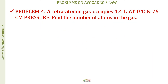The next question: a tetraatomic gas occupies 1.4 liters at 0°C and 76 cm pressure. We need to find the number of atoms. At 0°C and 76 cm of mercury, this is 1 atmosphere and 273 K — this is STP.